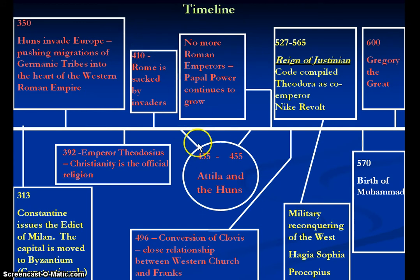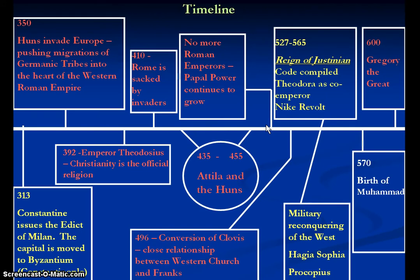Right around this time frame, we get Attila and the Huns at the height of their power in Eastern Europe. By this point, we have no more Roman emperors, and we see that papal power, that doctrine of Petrine succession. You get people like Pope Leo I, who is greatly expanding the power and influence of the Bishop of Rome. Later on, Gregory the Great is really solidifying it as not just a religious position, but also a political and economic one. And with the conversion of Clovis and the Frankish groups, you see this close relationship between the Western Church and the Franks develop.